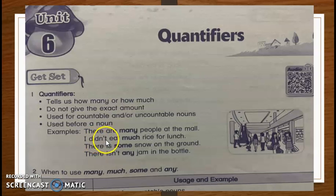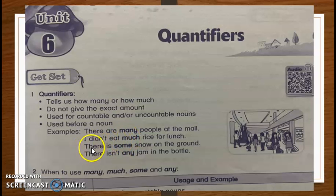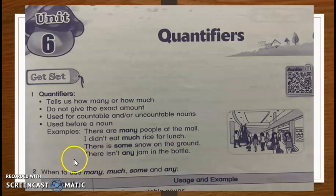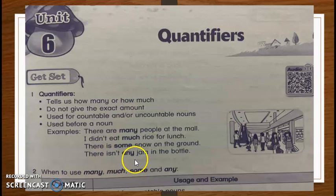There is some snow on the ground. 'Some' can be used on both sides — some boleh guna untuk countable ataupun uncountable, depends on the sentence. There isn't any jam in the bottle. If you see the word 'isn't', tidak ada, it must always use 'any'. Kalau ada perkataan isn't, mesti any.